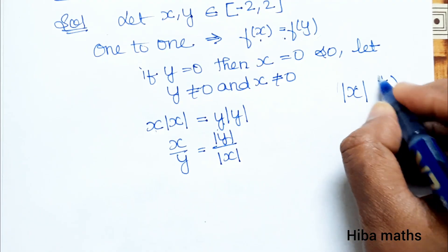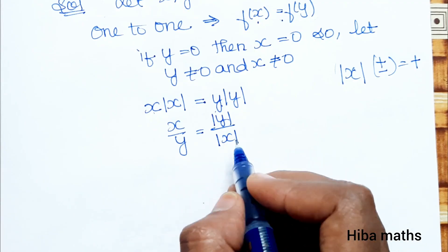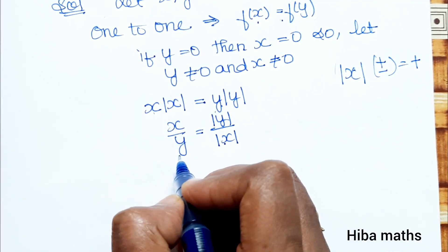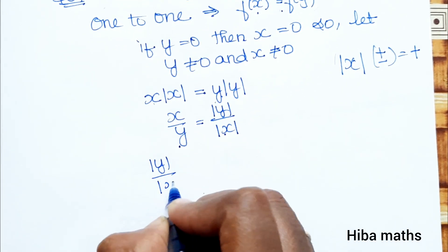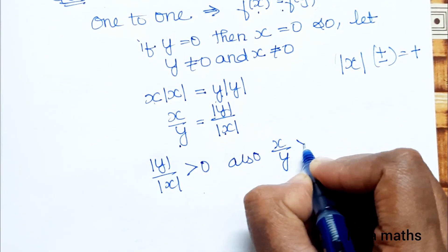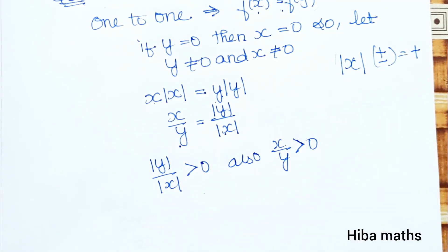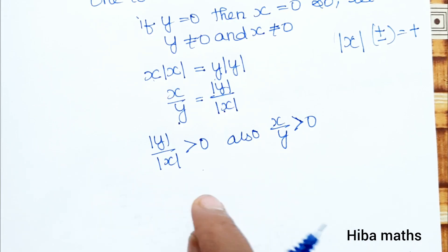Since |x| and |y| are positive, |y|/|x| is greater than 0 and x/y is greater than 0. This means x and y have the same sign — they are either both positive or both negative.